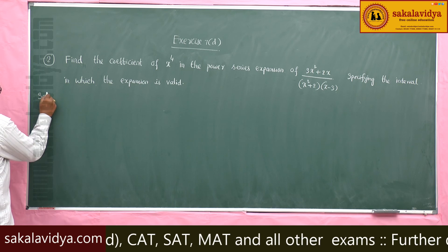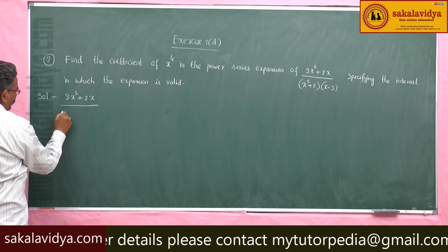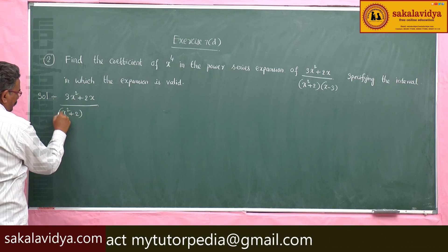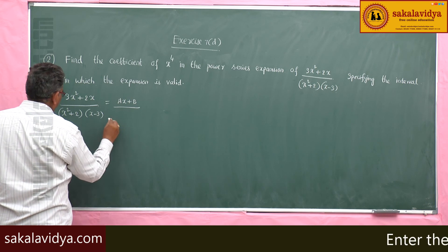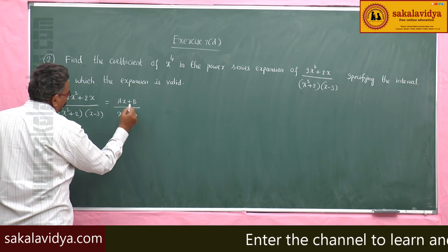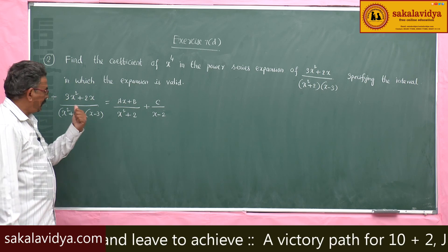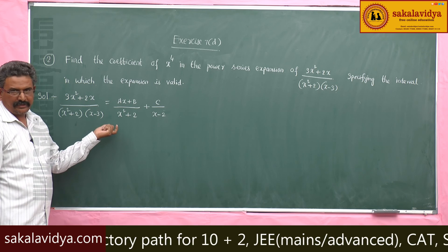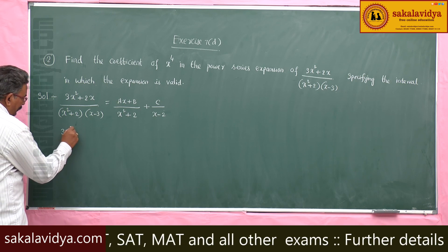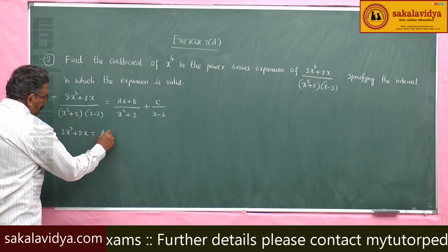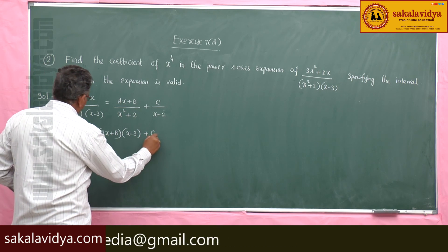Now, (3x² + 2x) / ((x² + 2)(x - 3)) — partial fractions give us (ax + b)/(x² + 2) plus c/(x - 3). Multiplying both sides by (x² + 2)(x - 3), we get 3x² + 2x = (ax + b)(x - 3) + c(x² + 2).